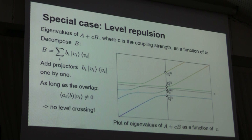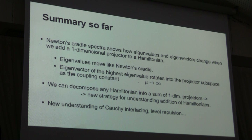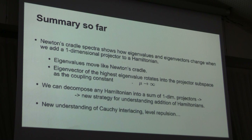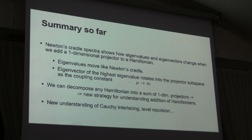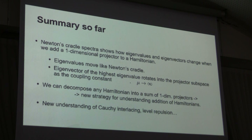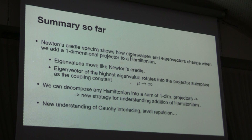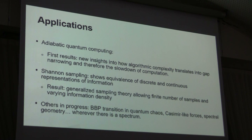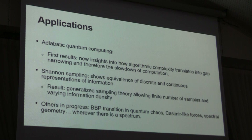Summary so far — this was the math of it. I showed you that eigenvalues move like Newton's Cradle when you add a rank-one projector to a self-adjoint operator. This is a new strategy for understanding how eigenvalues and eigenvectors change under addition of Hamiltonians, and I showed a new understanding of Cauchy interlacing and level repulsion. But maybe more interestingly, there are many applications for this method. I'll talk about adiabatic quantum computing, Shannon sampling, and there are many more — basically, if there's linear algebra, this is probably useful in some way.